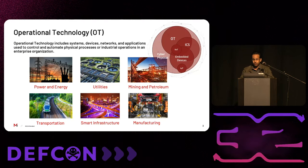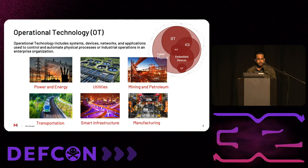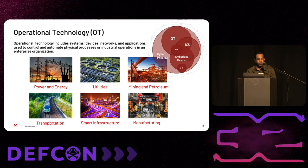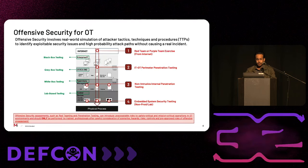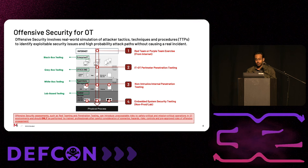I believe everyone here would already understand what we mean by operational technology. That said, I wanted to remind that OT basically deals with systems and platforms used to control and automate industrial-scale physical processes. People often tend to silo OT into a specific sector or industry, but OT covers a wide range of infrastructure, and my talk is industry agnostic — covering examples from power, utilities, transportation, manufacturing, and telecommunications.